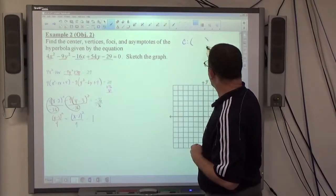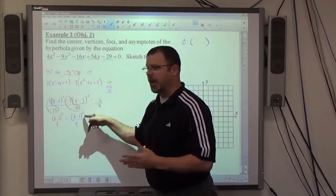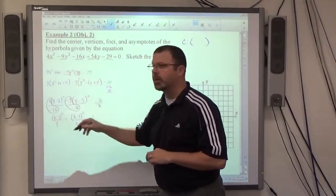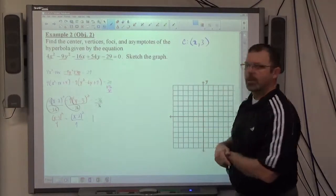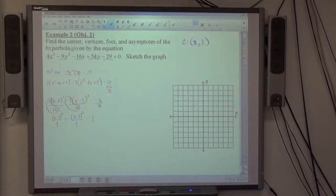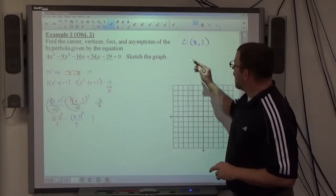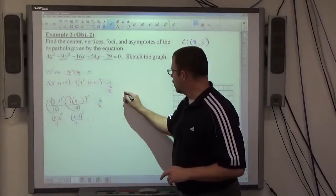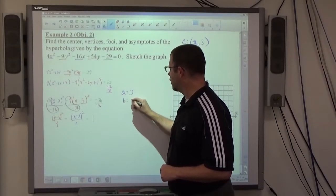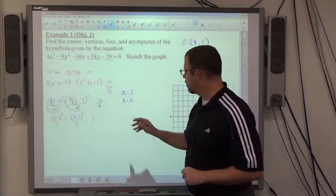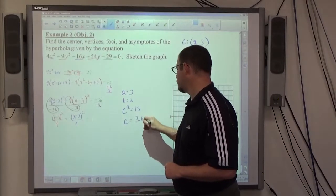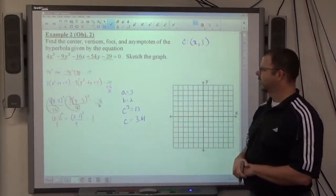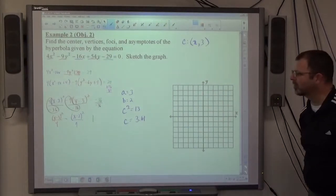Step 1, center. And again, it's HK. Be careful. X's aren't always in the front. So 2 comma 3 is HK here. So change the sign of the two numbers in the parentheses. I can see that A is equal to 3 and B is equal to 2, which makes C squared equal to 13, which means that C is equal to the square root of 13, which is 3.61. That looks familiar, right?